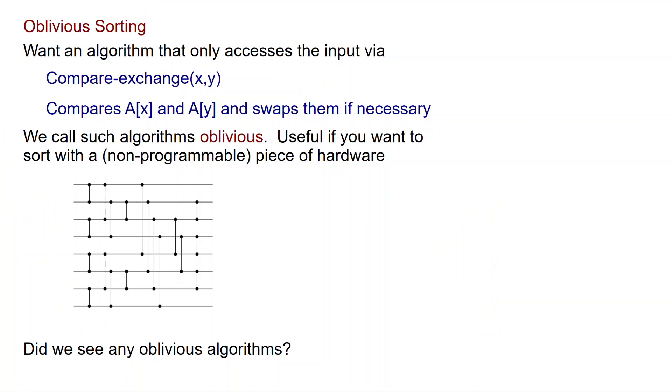In Oblivious Sorting we want an algorithm that only accesses the input in a restricted fashion. Specifically we are only going to allow compare exchange operations. A compare exchange operation takes as input two indices x and y and does the following thing. It compares the corresponding elements in the array A that we want to sort and if they are in the wrong order it swaps them.